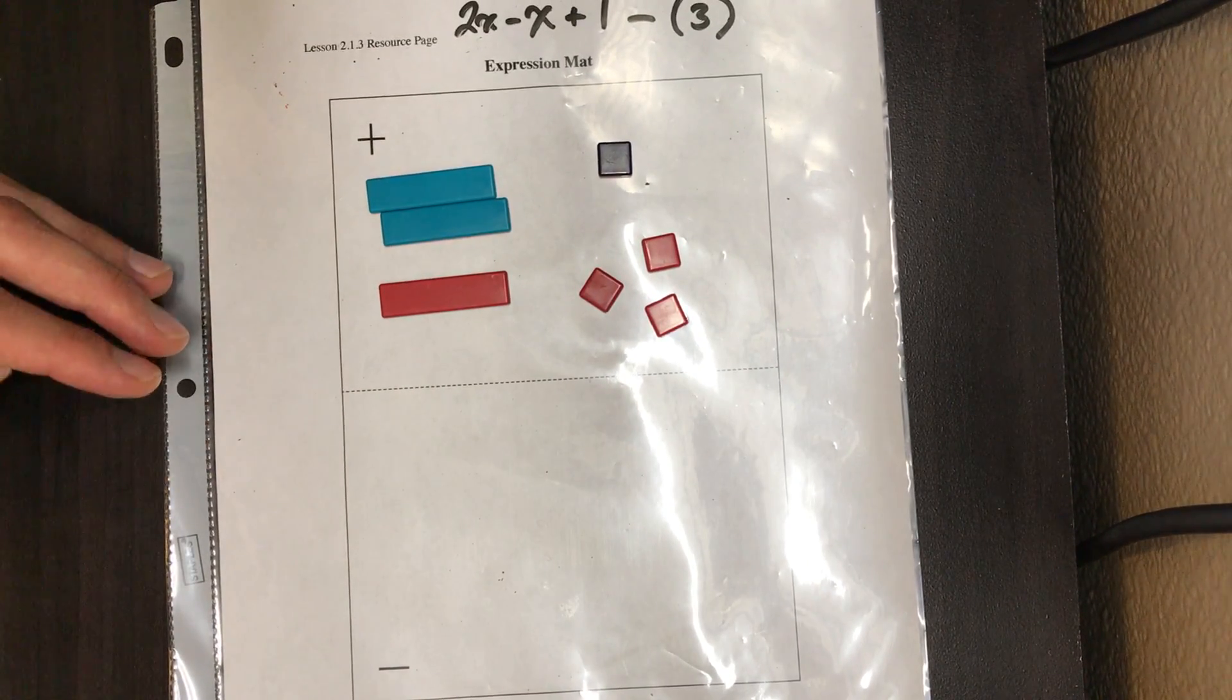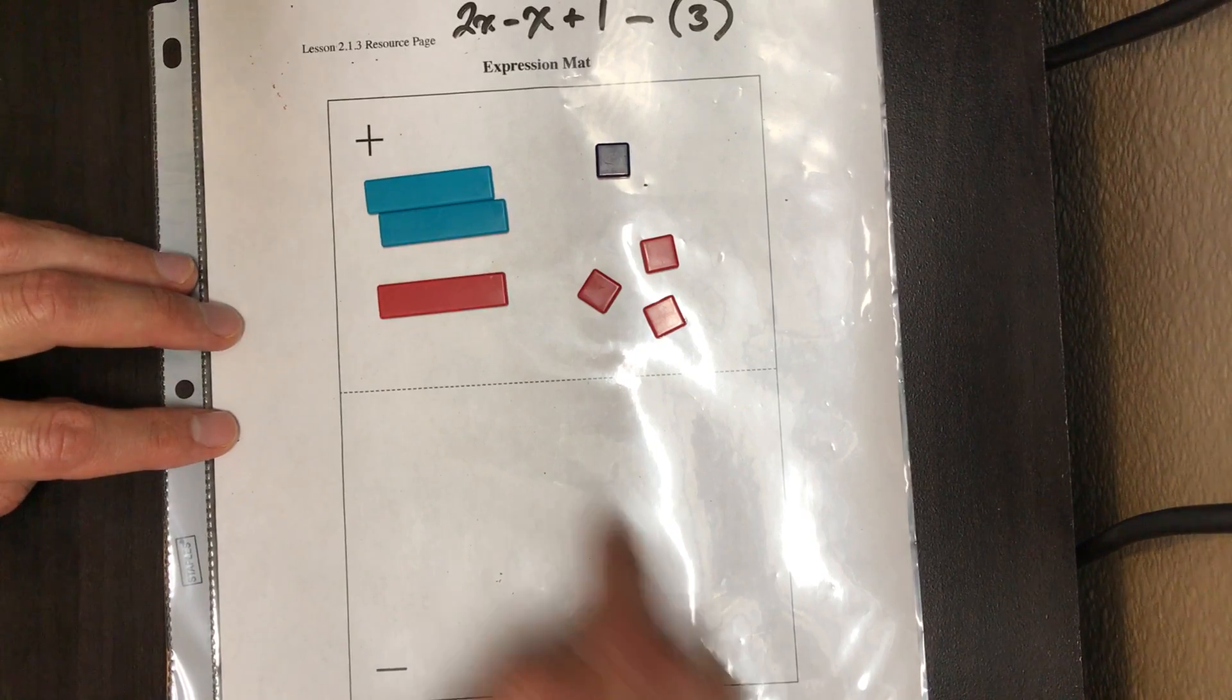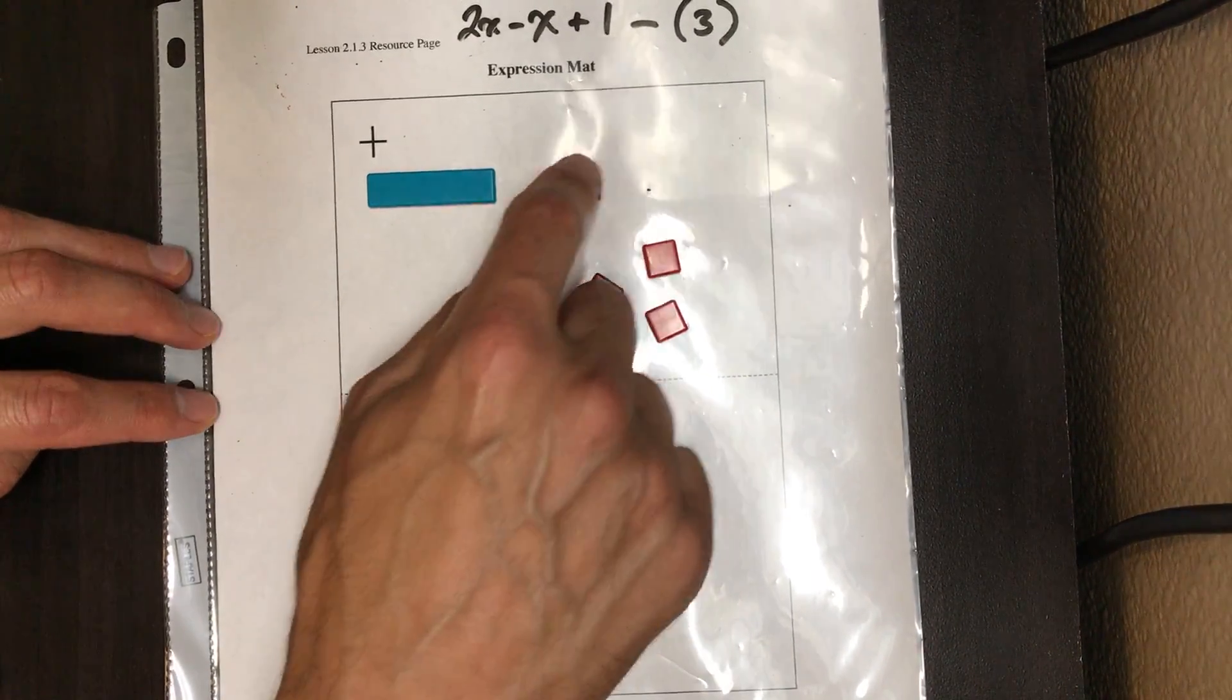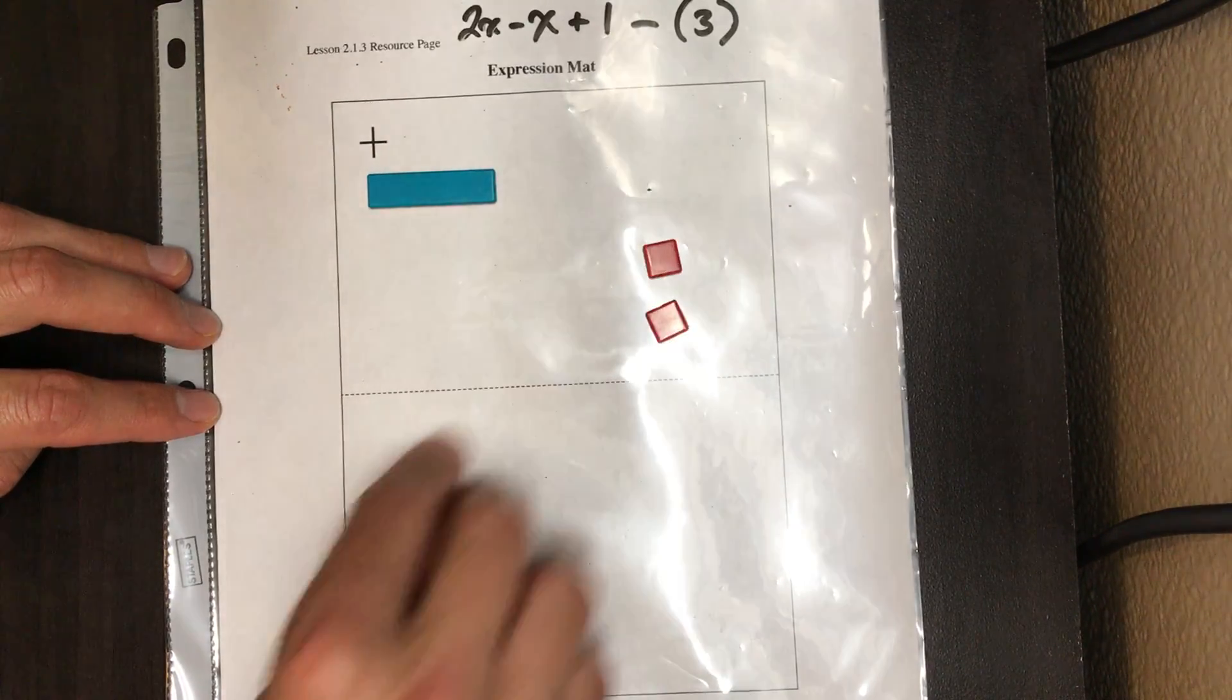Now we look for zero pairs, things that will create zero. So positive x plus negative x, gone. And then we've got positive one and a negative one, gone.